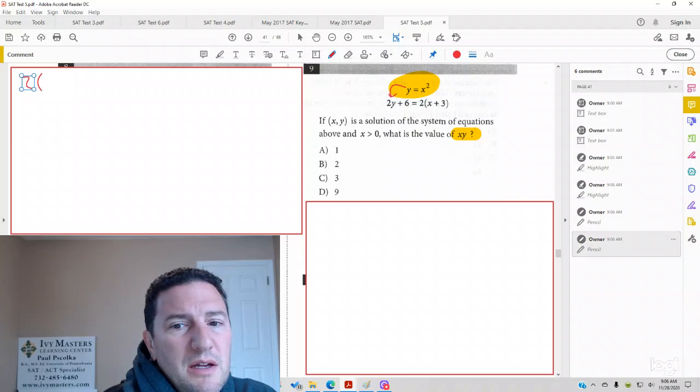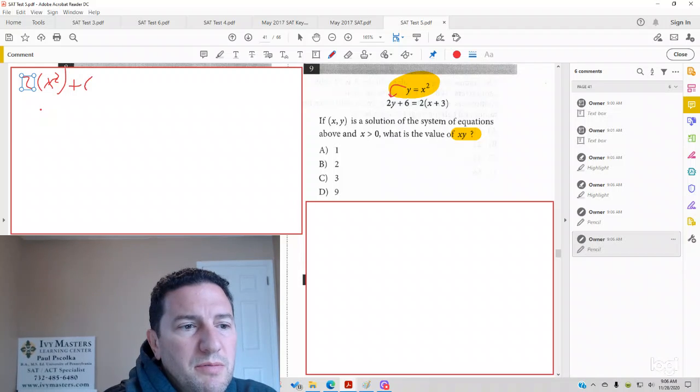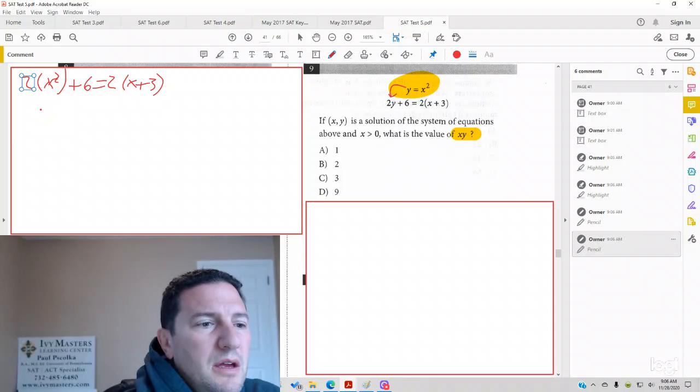And we get 2 times x squared. It's an ugly x squared, but it is an x squared plus 6 equals 2 times (x + 3). And it's 2x² + 6. Distribute the 2 on the other side. Don't forget to distribute it to the 3.